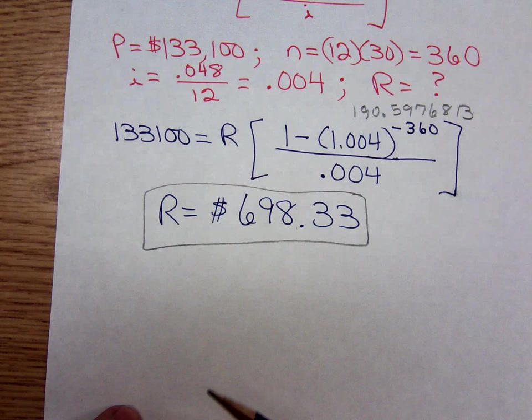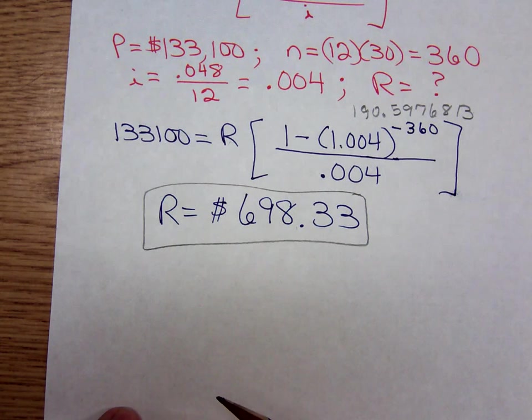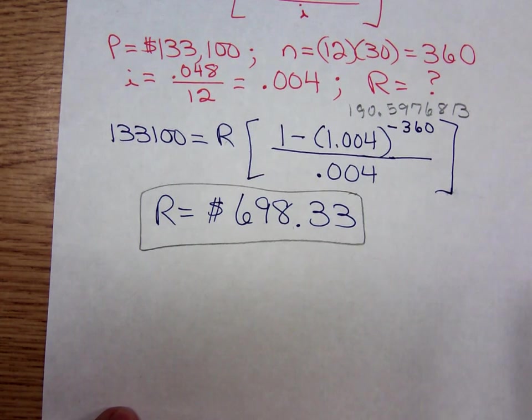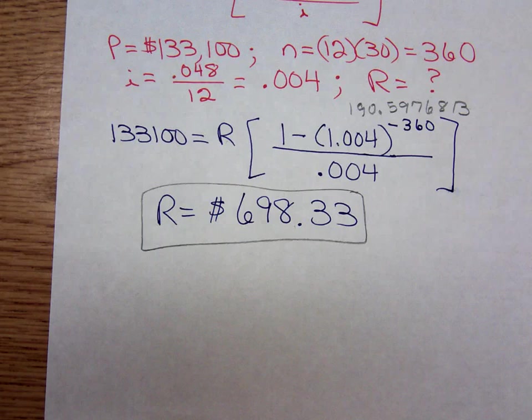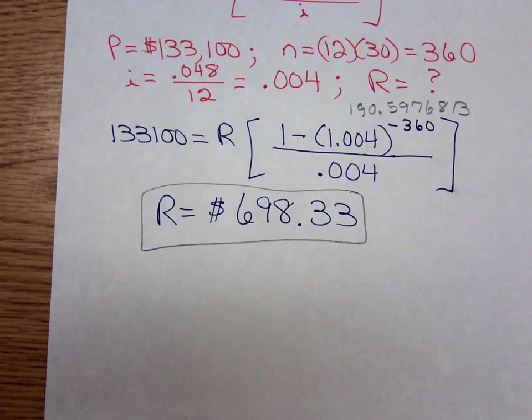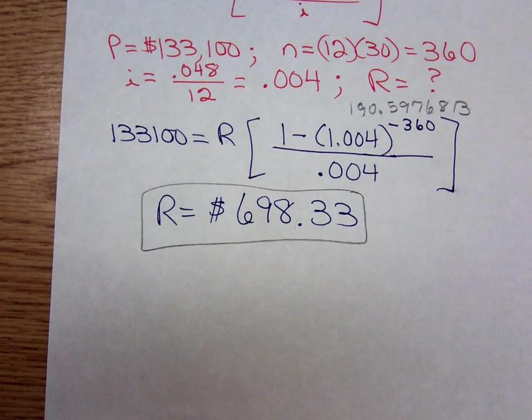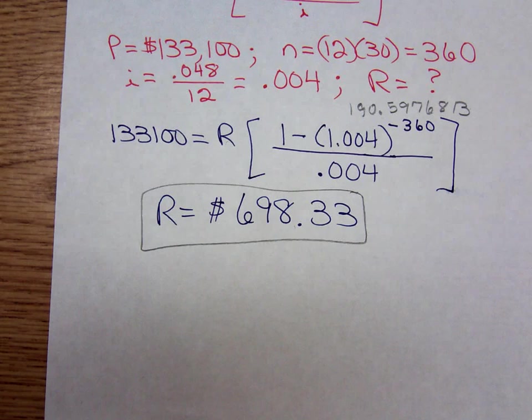A very small portion of that $698.33 will actually be going towards paying down your principal. I guess that's not too bad—$698.33. But that's a pretty good rate, that 4.8%.